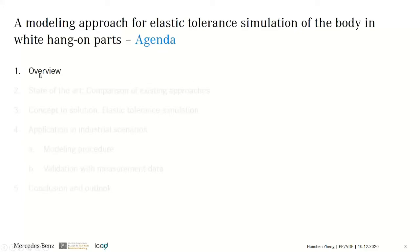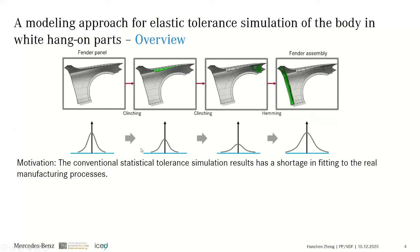Tolerance analysis is becoming more and more important in the automotive industry. It is used to analyze the manufacturing and manufacturability of complex assemblies at an early stage, to reduce product development time and cost for hardware prototypes. Regarding body-wide handling parts like the fender, door, bonnet, and trunk lid, rigid tolerance simulation is usually implemented to calculate tolerance stack-ups in the assembly process.